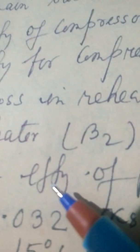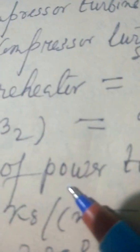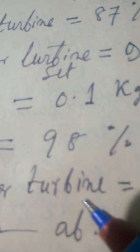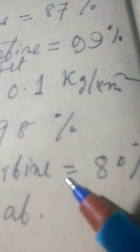Total head isentropic efficiency of power turbine is equal to 80%.